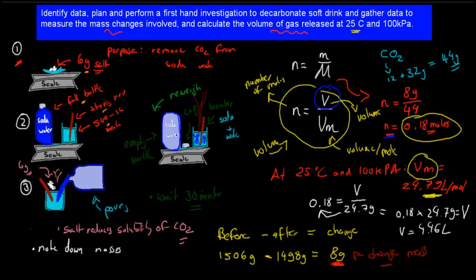So now what that means is that the actual escaped carbon dioxide, which was 8 grams, and then we use that formula to calculate that was 0.18 moles. So 0.18 moles of carbon dioxide that have escaped will take up 4.46 liters in terms of its volume.